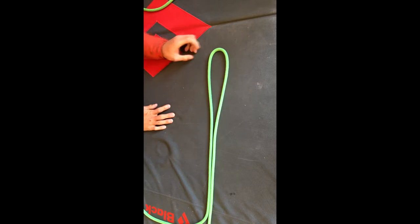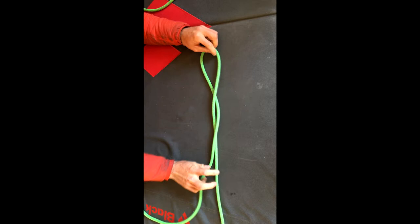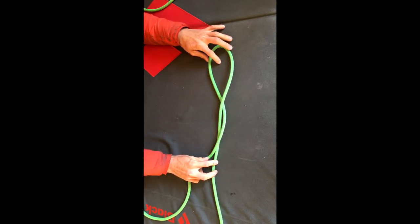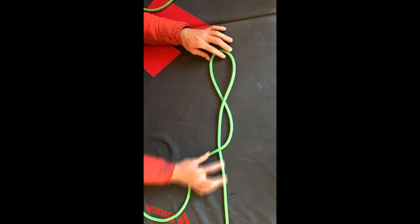From here we're going to take that bight and put in two twists - one, two. You can see that we've created a loop at the top, a loop in the middle, and we have two legs coming out the bottom.